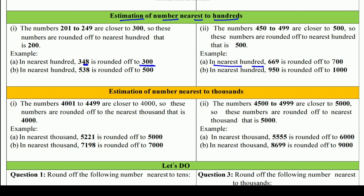In nearest 100: 669 है, तो 2 digits 69 हैं जो 50 से ज़्यादा हैं, तो बन जाएगा 700। इसी तरह 538 — 38 है जो 50 से कम है, तो 500 पर रहा। लेकिन 950 है — 50 और 50 से ज़्यादा है, तो next वाले 100 पर जाएंगे। 900 के बाद next 100 होता है 1000, तो वो 1000 बन जाएगा।